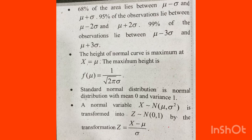The height of the normal curve is maximum at x equal to mu, where f(mu) = 1 divided by square root of 2 pi sigma. The standard normal distribution has mean equal to 0 and variance equal to 1, and z is equal to x minus mu divided by sigma, which follows N(0,1).